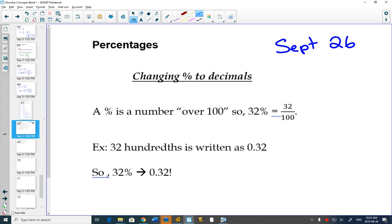Someone says, oh, I got 70% on my test. Well, what does that mean? 7 out of 10, or 70 out of 100, because a percentage is a number over 100. So if you got 32% on your test, it's like you got 32 out of 100.